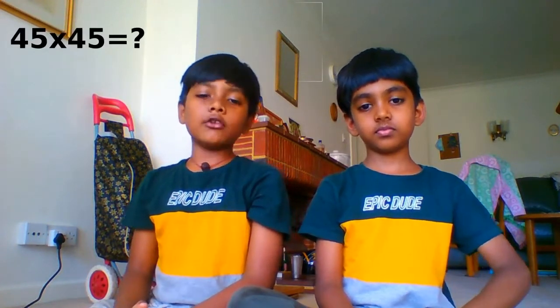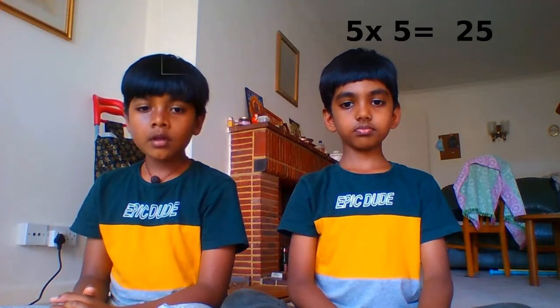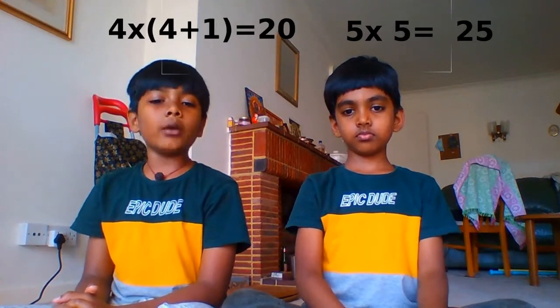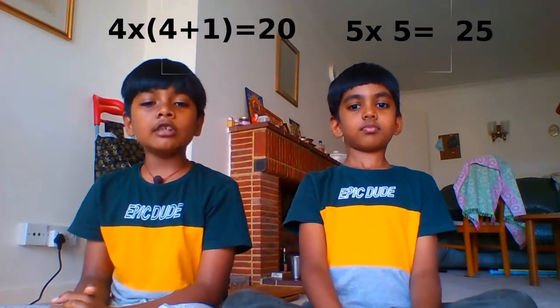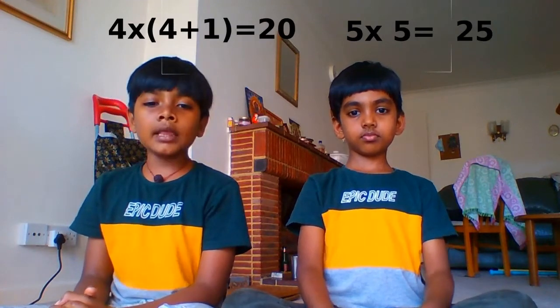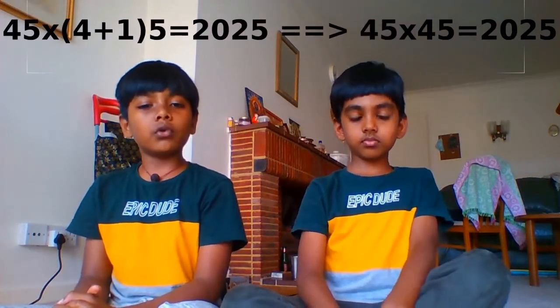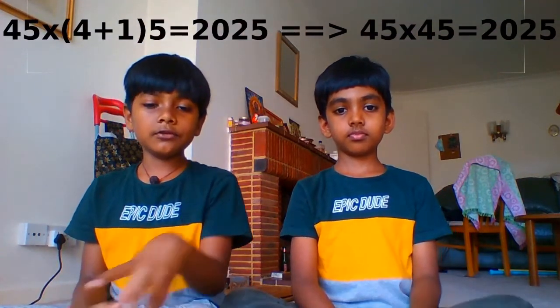For example, let's take 45 times 45. You first multiply the ones digits: five times five equals 25. Then you multiply four times four and add one — four times five is 20. Then you combine the 20 and 25, so it makes two zero two five: 2025.